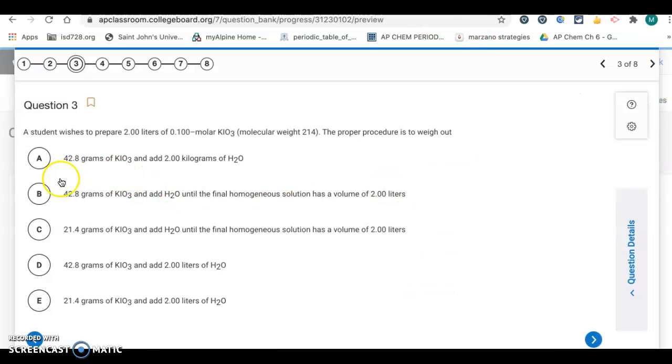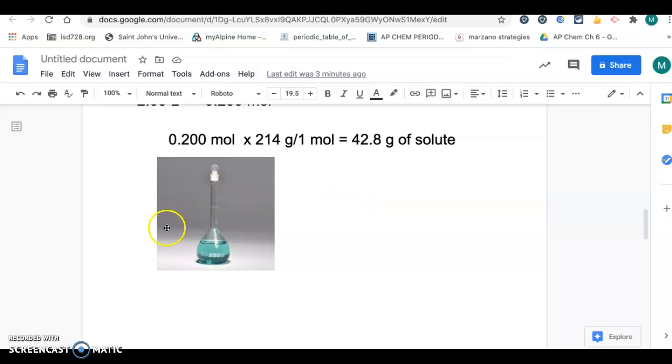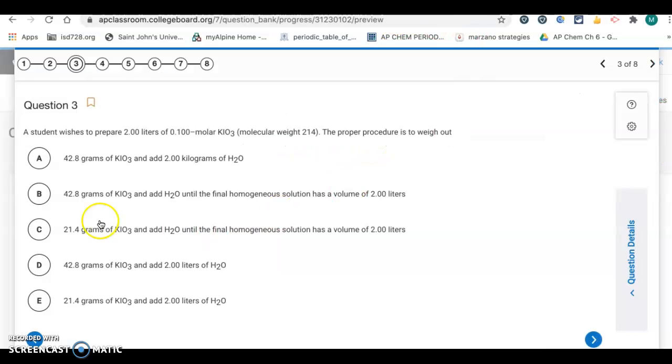So the way to set this up is we want to take, that's letter B, we want to take 42.8 grams of KIO3 and add water until the final homogeneous solution, so you have it all dissolved, has a volume of 2 liters. So the other two that has 42.8, A and D, would give you a volume that's just a little bit more than 2 liters. And really the actual way that you want to do that is to, the proper procedure, is to use a volumetric flask that has a volume of 2 liters, and you fill up the bulb maybe about halfway up, and then you dissolve the 42.8 grams of solute in this half-filled volumetric flask and swirl that around until it's all dissolved, and then you add water until you get to the mark on the neck, and then you know you have exactly 2 liters. Alright, so that's going to be letter B.